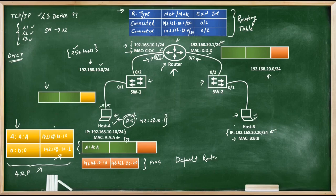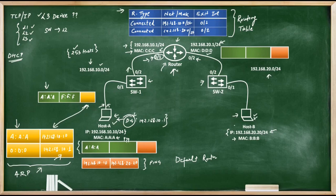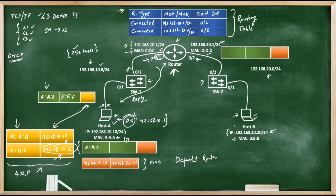Host A sends this ARP broadcast out of its Ethernet link with source MAC A:A:A and destination MAC F:F:F:F:F:F (the broadcast address). The switch forwards this packet on all ports except the one it was received on. The ARP packet reaches the router, which removes the outer frame and looks inside. It sees its own IP address as the target IP, so the router sends a unicast ARP reply back to Host A. Through the ARP reply, Host A learns the MAC address of the router's 0/1 interface — C:C:C — and can now complete the frame, placing C:C:C in the destination MAC address field.